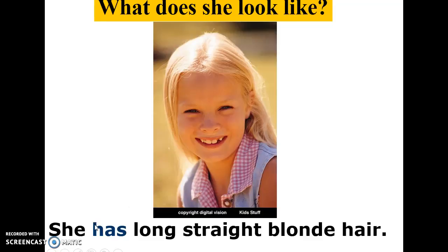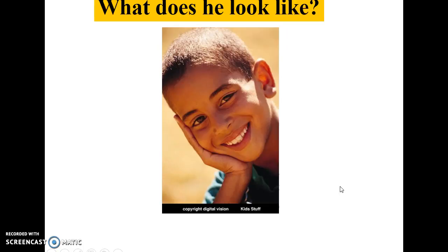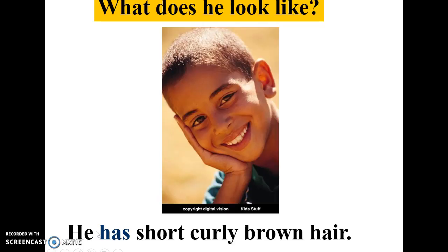What does she look like? She has long, straight, blonde hair. She has long hair - the shape is straight - the color is blonde. What does he look like? Can you describe him? He has short, curly, brown hair. Short, curly, brown hair. Remember, it's important that you use the correct order of adjectives. For he and she, we use 'has'.